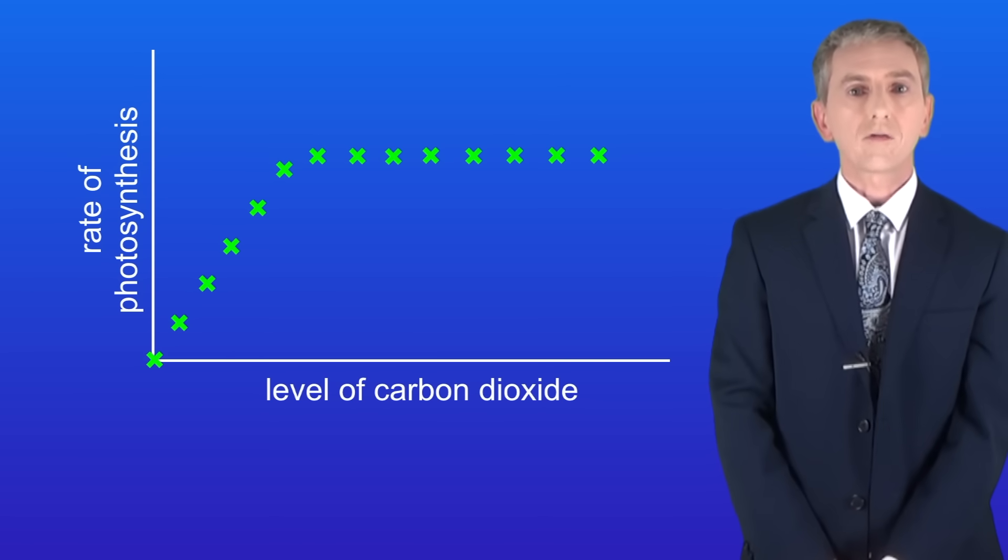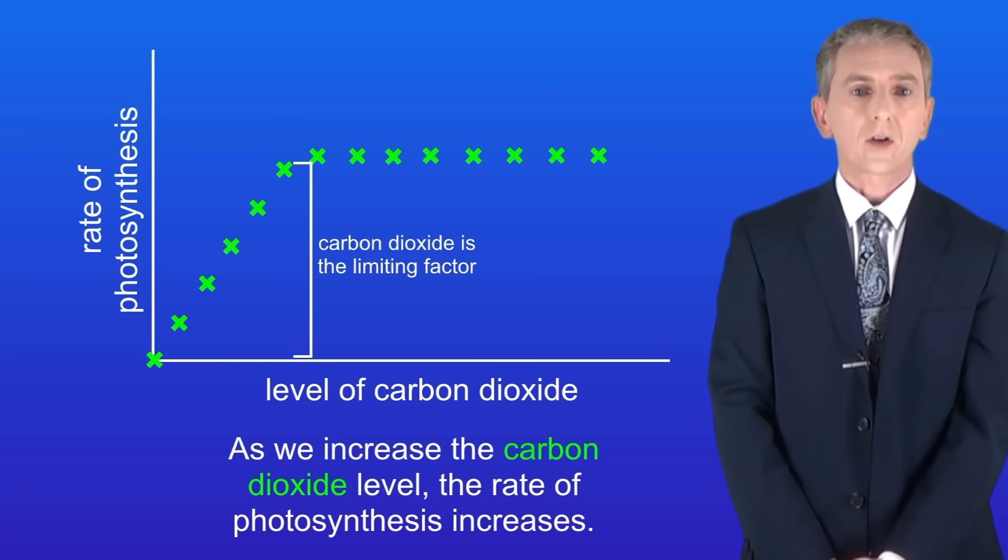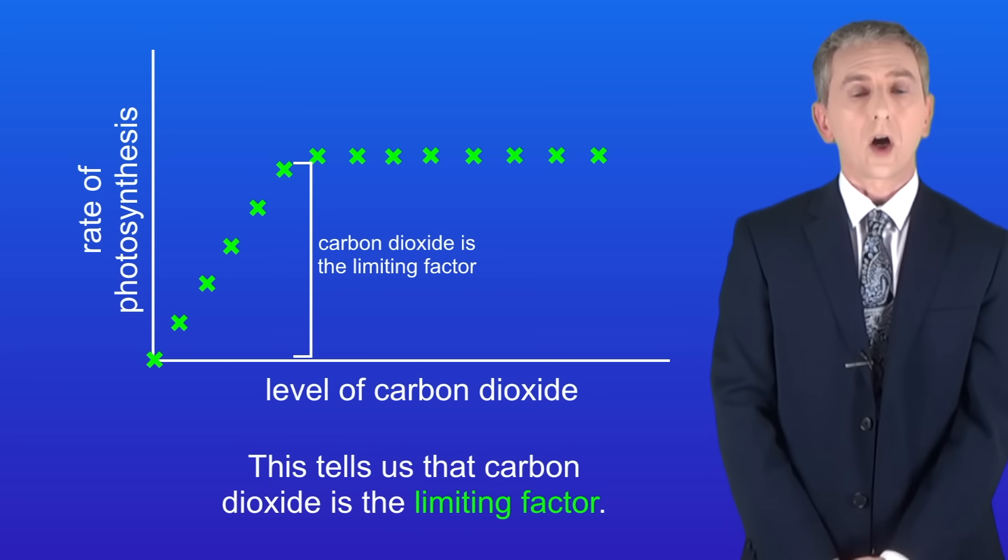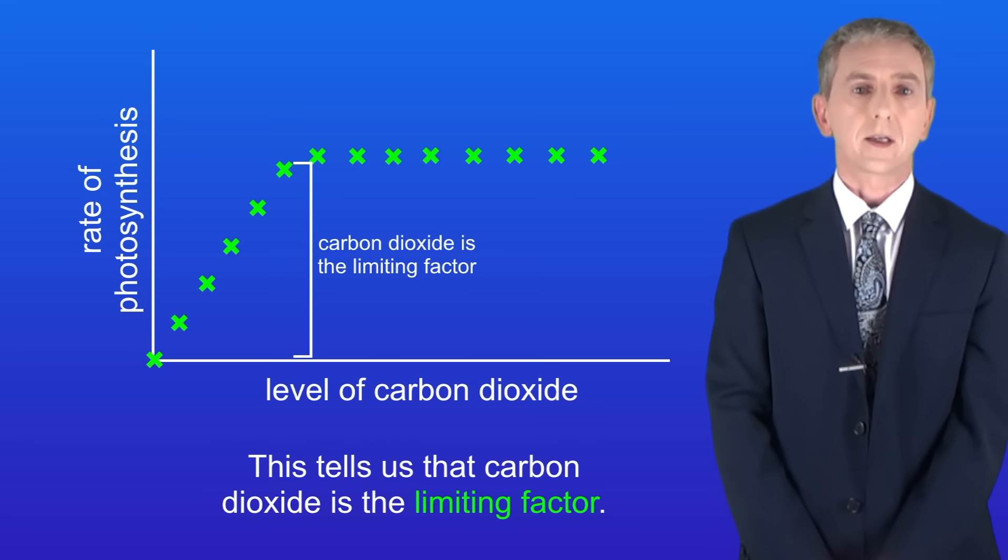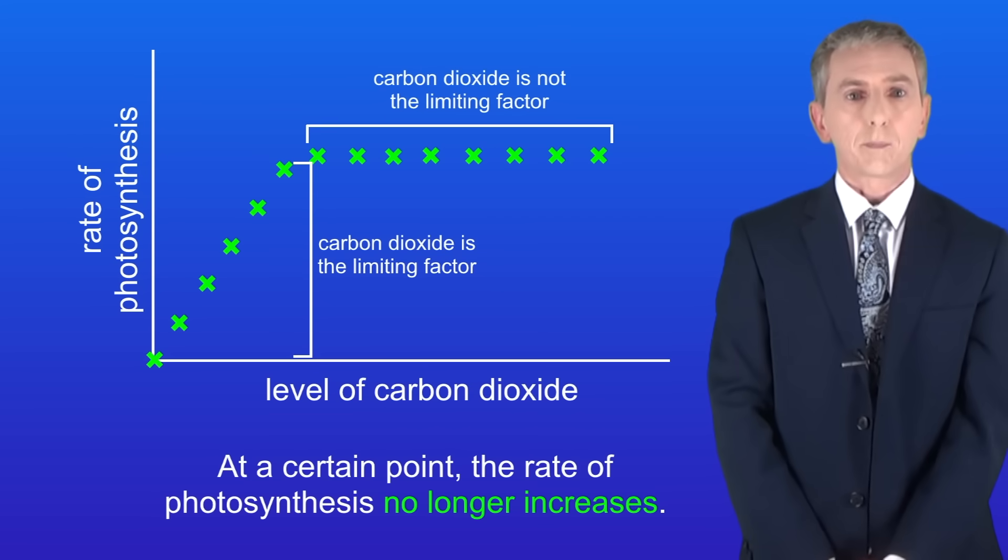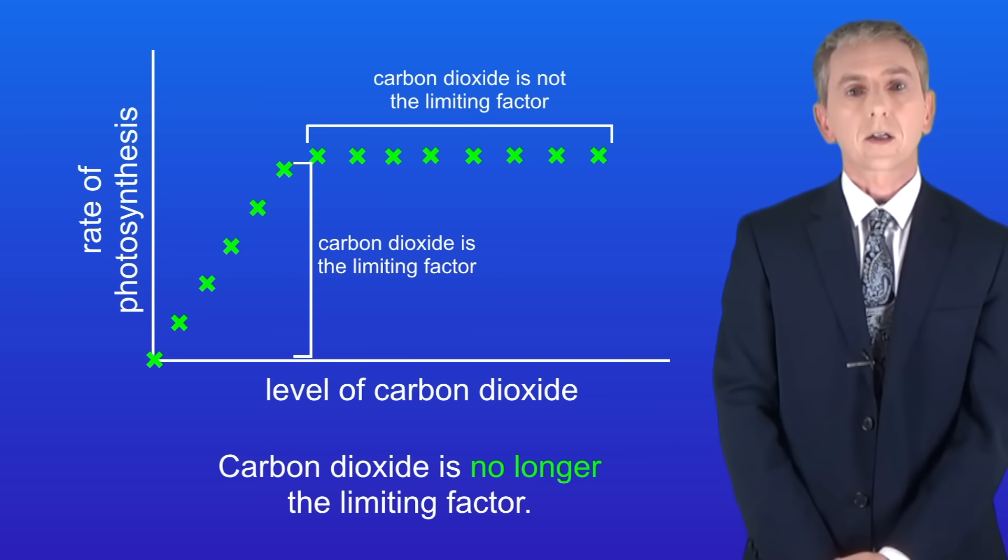As you can see, the shape of the graph is exactly the same as the one for light intensity. As we increase the carbon dioxide level, the rate of photosynthesis increases. This tells us that carbon dioxide is the limiting factor. However at a certain point, the rate of photosynthesis no longer increases telling us that carbon dioxide is no longer the limiting factor.